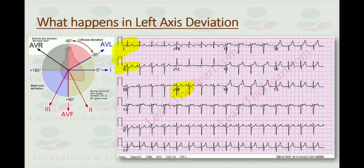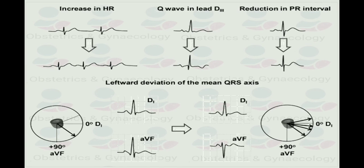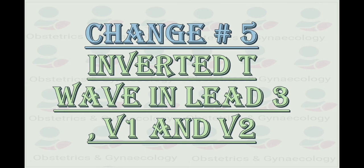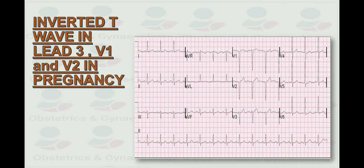This is a summary of whatever changes take place in pregnancy. There is an increase in heart rate, Q wave in lead 3, reduction in PR interval and leftward deviation of the main QRS complex. Let's discuss change number 5, the inverted T wave in lead 3, V1 and V2. In this ECG, you can see inverted T waves in lead 3, V1 and V2, which occurs normally in pregnancy. But in normal ECG, you will not come across inverted T wave in lead 3.